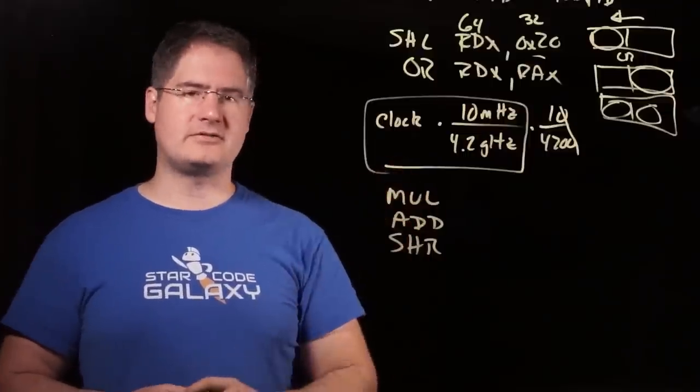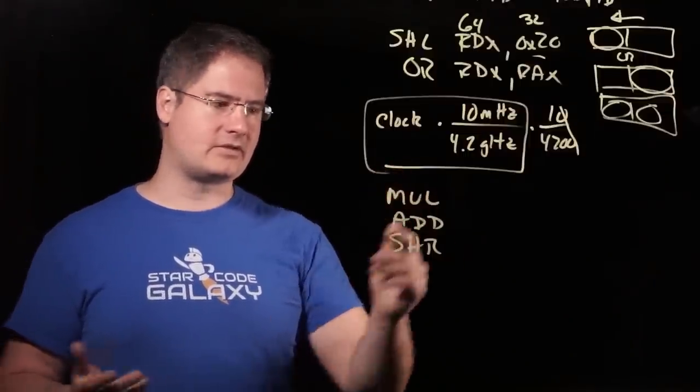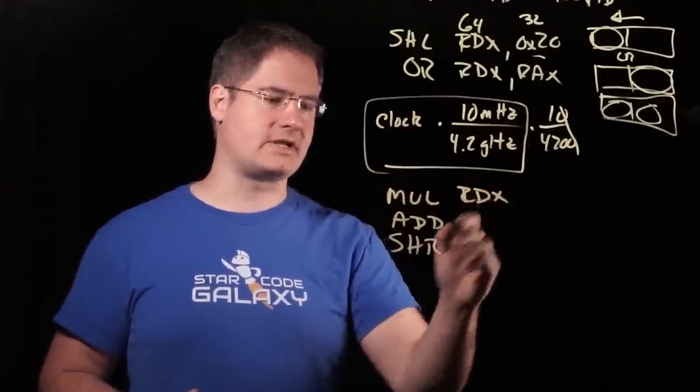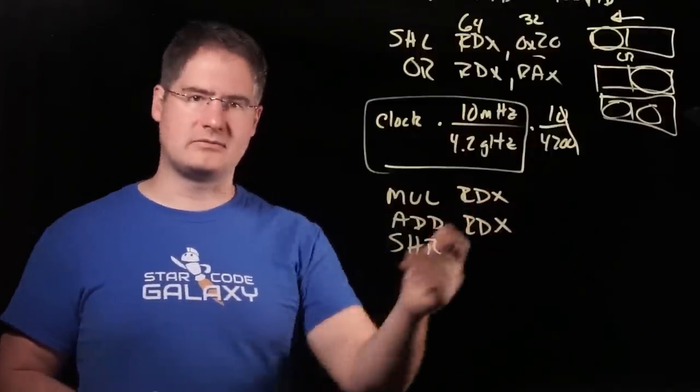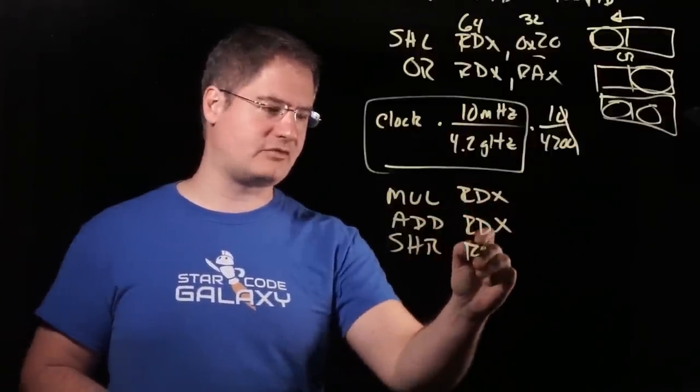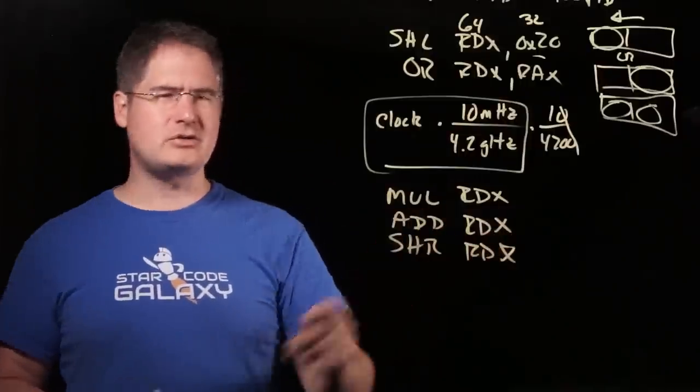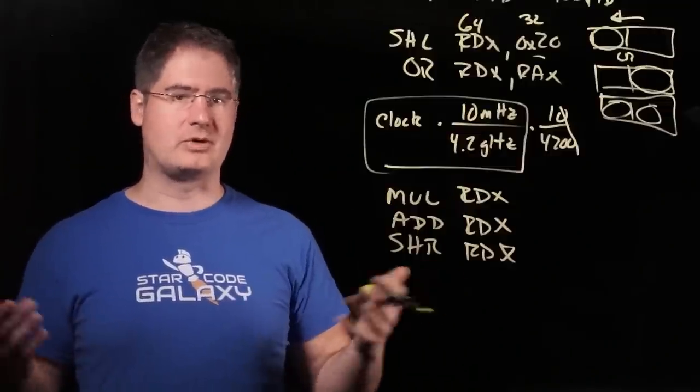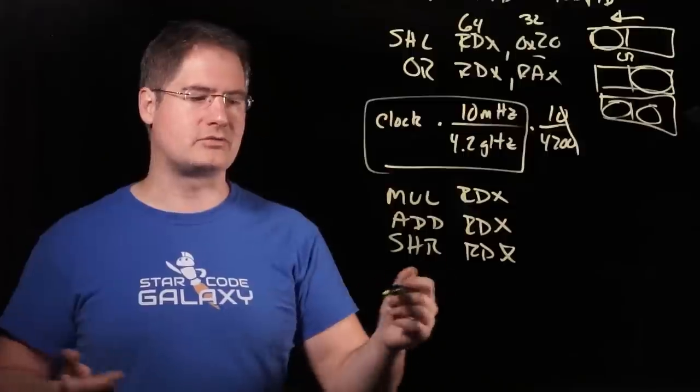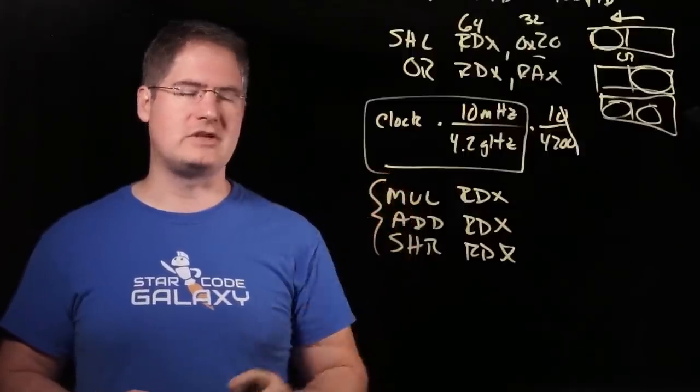So, we're loading a constant to multiply by, and this multiply is a mul RDX, right? We're adding to that same value, that RDX, and we're shifting that RDX. Now, we actually do two separate adds, but that's neither here nor there because two separate adds could have been fused into one. It doesn't really do anything with the value in the interim. So, this is effectively the sequence we're executing.